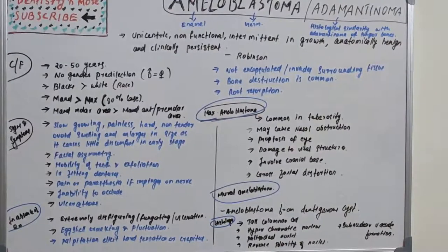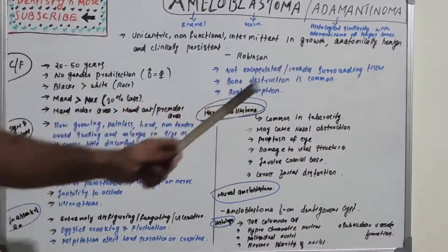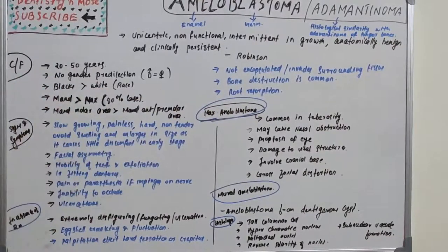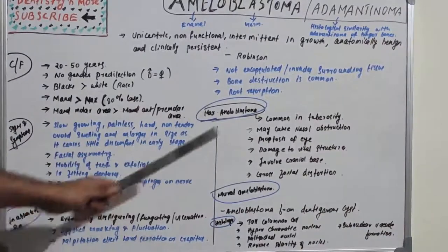Palpation elicits hot sensation and crepitus. Ameloblastoma is not an encapsulated tumor; it invades the surrounding tissue. Bone destruction is a common feature, as is root resorption — because it is continuously growing and invades surrounding tissues.